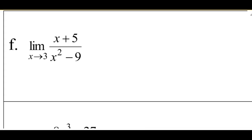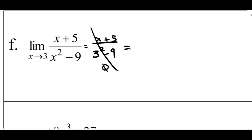Let's look at F. First thing I try is direct substitution, and I check that in the denominator: I'd have X plus 5 over 3 squared minus 9, and that's going to give me 0. So this isn't going to work. Next thing I want to check is can I factor? X plus 5 doesn't factor, but X squared minus 9 does — it factors to X plus 3 and X minus 3.